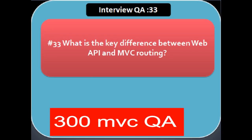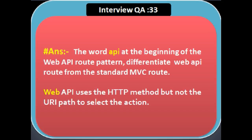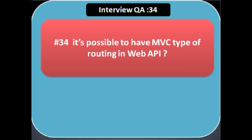Next question: what are the key differences between Web API and MVC routing? Routing is a pattern matching system that monitors incoming requests and decides what to do. MVC applications and Web API must have at least one route defined to function. The word 'api' at the beginning of Web API route patterns differentiates Web API routes from standard MVC routes, and Web API uses the HTTP method — not the URL path — to select the action.